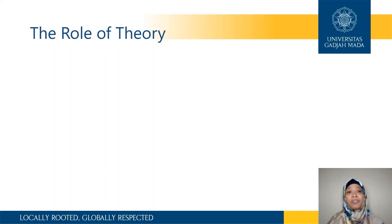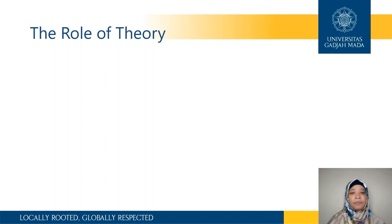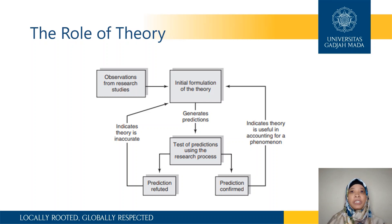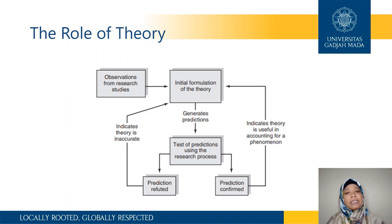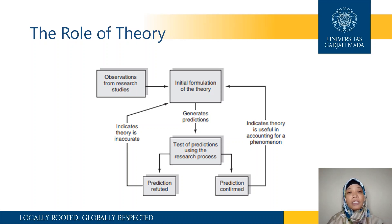What is the role of theory in research? Theory is the most important element and foundation in any research. From theory, we generate predictions, hypotheses, assumptions, or expectations of how the result would be. Then from these predictions, we can test them using the research process. The predictions could be confirmed or refuted — either way is fine. When your prediction is confirmed, it indicates that this theory is useful in accounting for a phenomenon.